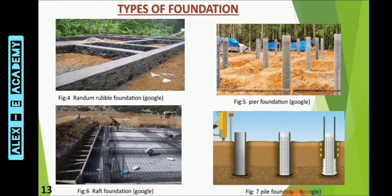The random rubble masonry foundation is an ancient stone foundation method where rough, uneven stones are used to make the foundation. It is cost-effective and environmentally friendly as it does not require energy-intensive materials like cement and steel. Pier foundation, raft foundation, and pile foundation are used in weak soils.